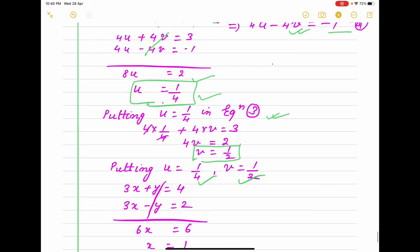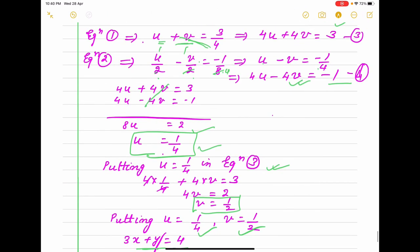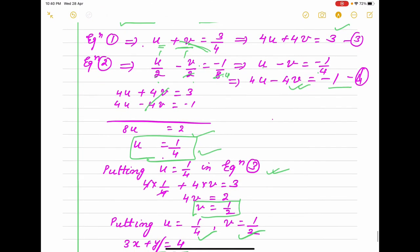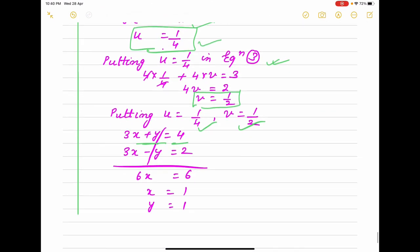But our equation is in terms of x and y. 3x+y = 4. If you put the value here, 1/(3x+y) is u, and u we have got 1/4. So 3x+y is reciprocal of it, it is 4. And 3x-y will be 2. If you add it, 3x+3x = 6x, x = 1. Putting this value, we are getting y = 1. So this way we simplify it.